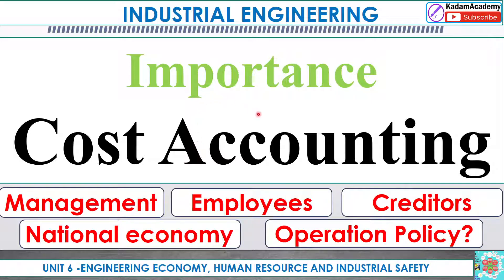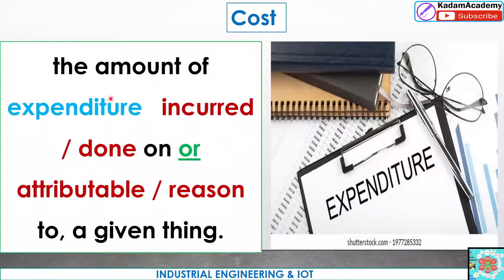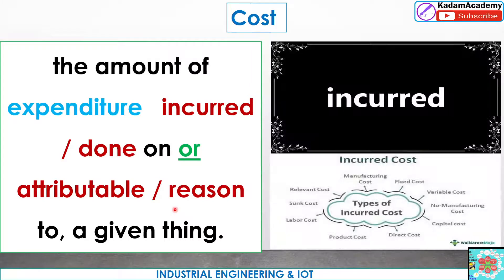Before starting, cost accounting is made up of two words: cost and accounting. What is cost? The amount of expenditure incurred or attributed to a given thing. This incurred cost may be of various types — fixed cost, variable cost, non-manufacturing, capital, direct, labor, sunk, delivery, and manufacturing costs. Different costs may be incurred; that expenditure is nothing but the cost for that particular given thing.